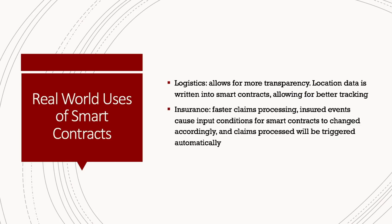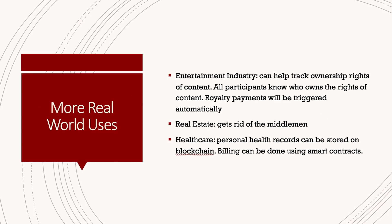Claims are processed once the trigger is fired. For example, if a major event like an earthquake occurs, it would automatically be inputted into the system — the magnitude of the earthquake would be the trigger that fires the claims processing, making it much faster and more efficient. The entertainment industry is another big use case: it helps track ownership rights of content, all participants know who owns the rights, and royalty payments are triggered automatically. Real estate is another no-brainer, as there are so many middlemen — lawyers, agents, brokers — and smart contracts simplify the process and aim to eliminate many of those middlemen.